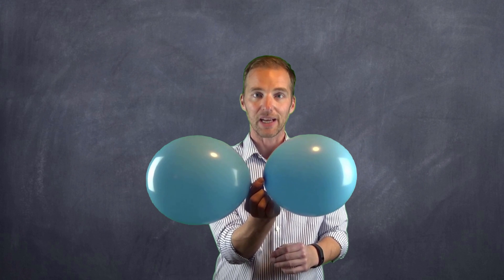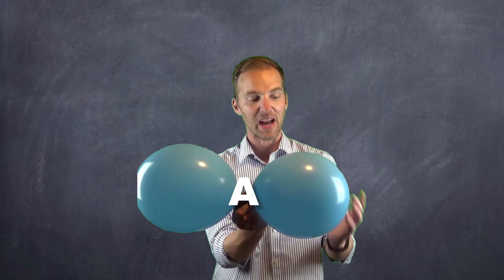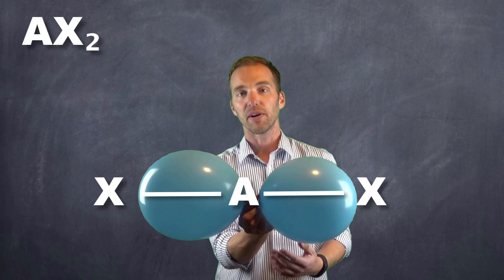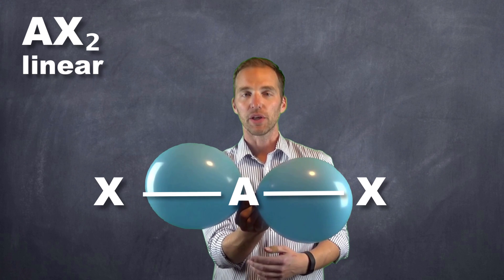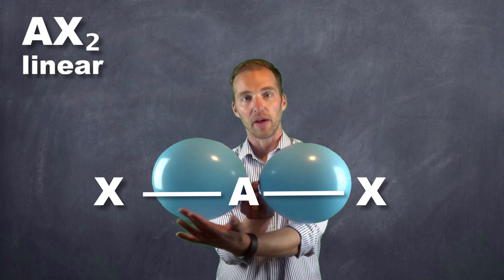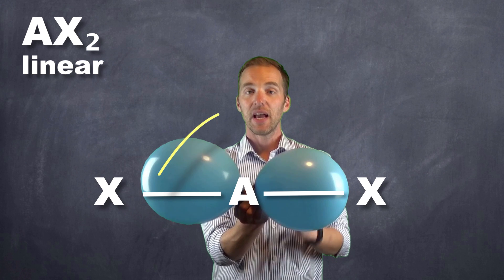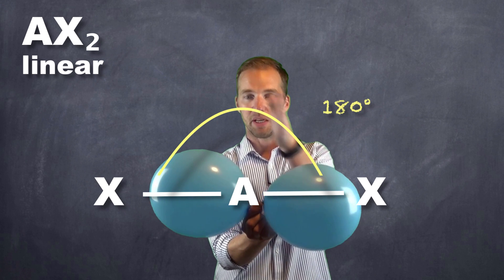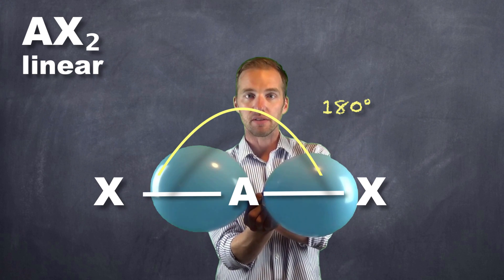This is one of the simplest molecular classes. We refer to this as an AX2-class molecule — A being the central atom, X representing the two peripheral atoms on the outside. This is a linear molecule because drawing lines between the central and peripheral atoms gives us a straight line, with a bond angle of 180 degrees.